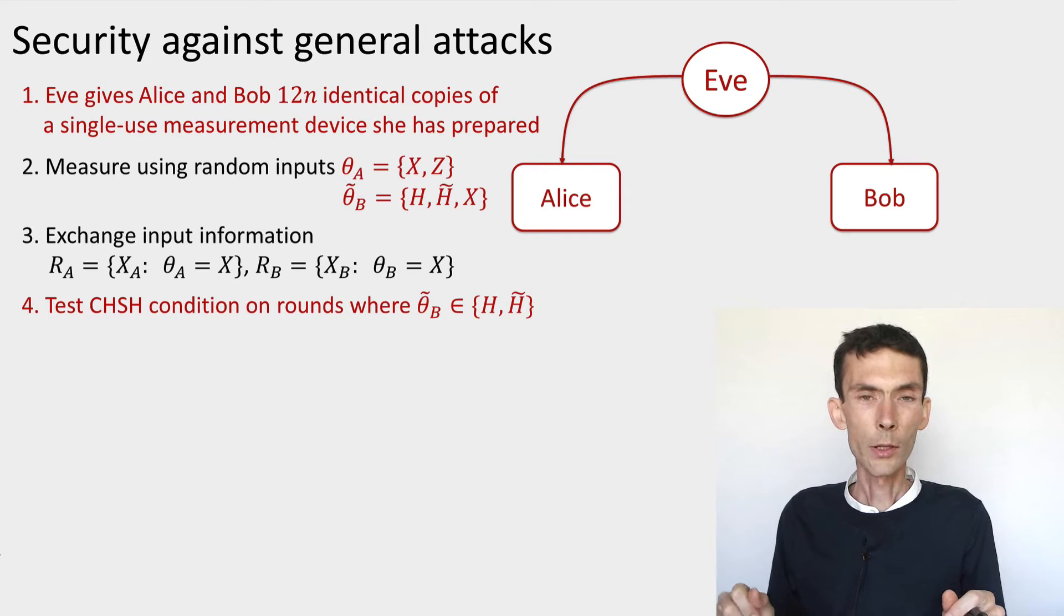Then they perform certain tests on these outputs that they've obtained for a subset of the rounds. The remainder rounds they use as a basis for their raw key, on which they perform information reconciliation and privacy amplification. And in this video, we're not assuming that the devices behave independently at each round. It's just an arbitrary tripartite device that you use sequentially.